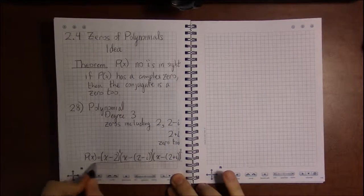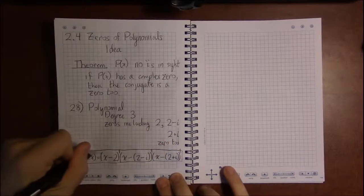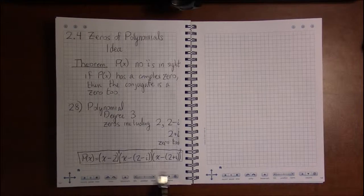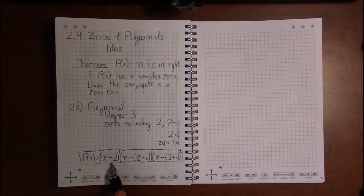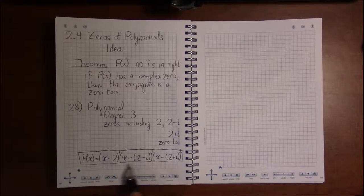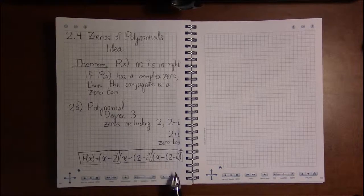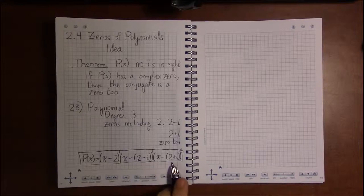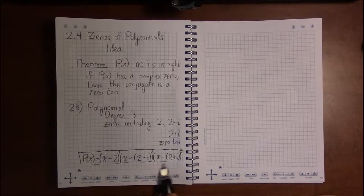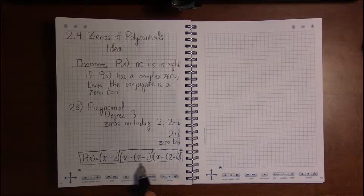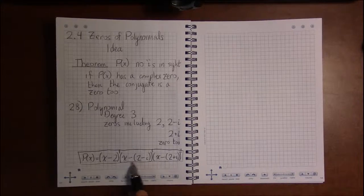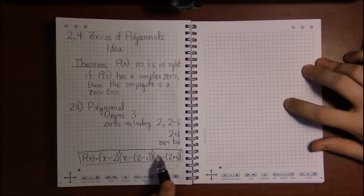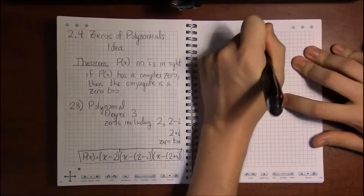But the book I believe is going to go one step further just to be a pain, as it usually is. It's going to distribute all these things. You don't need to do that, but just for the sake of you being able to check your answers, I'm going to step you through it. So let's deal with the hardest ones first. Let's deal with these two complex number factors here, so I'm going to have to FOIL all this out.